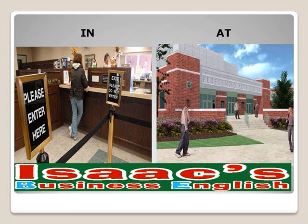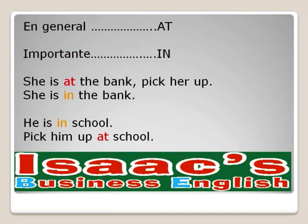What happens is that we use 'at' when we refer to a location in general — at, in general, is 'at.' So we say: she is at the bank, because that is where she is — it's the general point. Now, if we think it is important to say that she is inside the bank, then we use 'in': she is in the bank. In the case of the boy at school — he is in school — we want to convey that it is important that he is in school, because he is not available; he is in school and will remain there the rest of the morning.